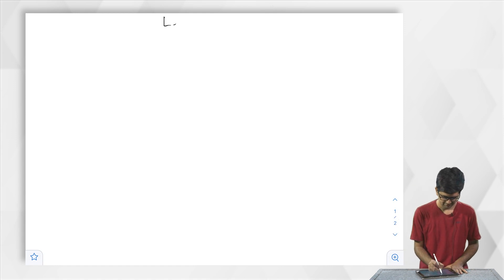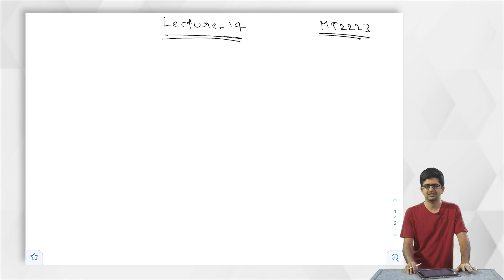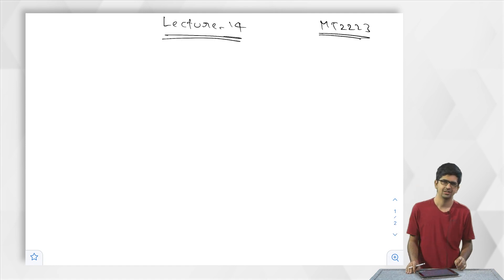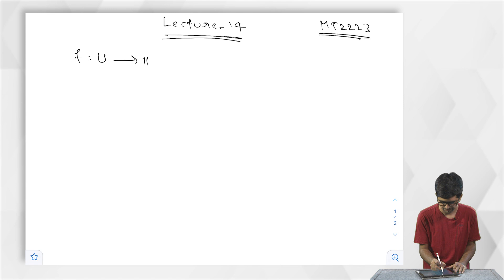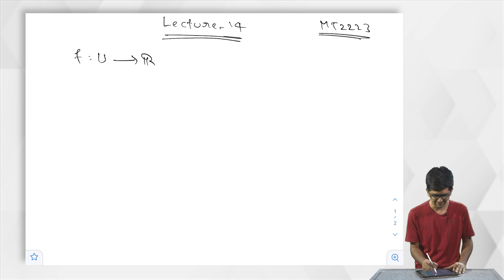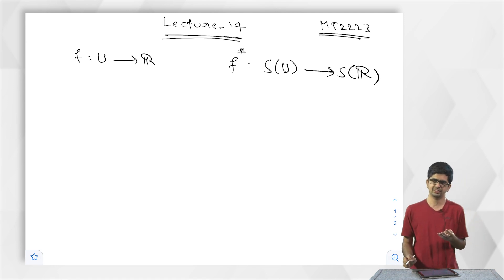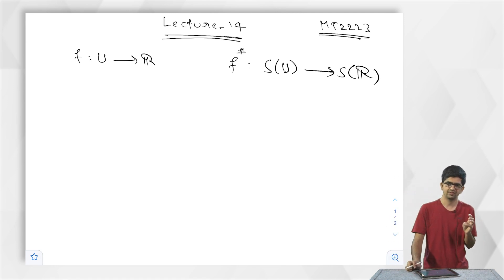Hi, this is lecture 14 of M2223. In the last session we discussed the notion of bounded functions and monotone functions. We are interested in functions f from U to R that preserve certain kinds of sequences. We mentioned four types of sequences: convergent sequences, monotone sequences, bounded sequences, and Cauchy sequences.